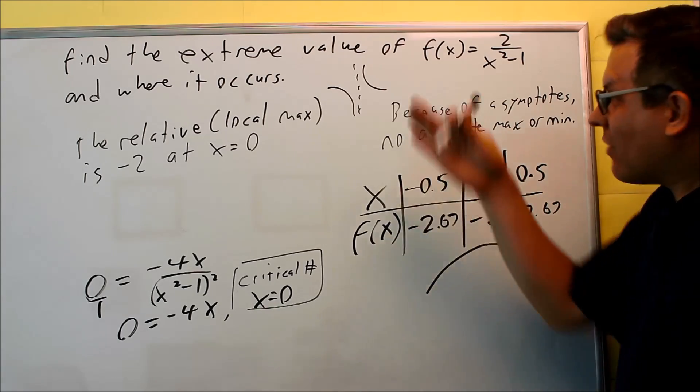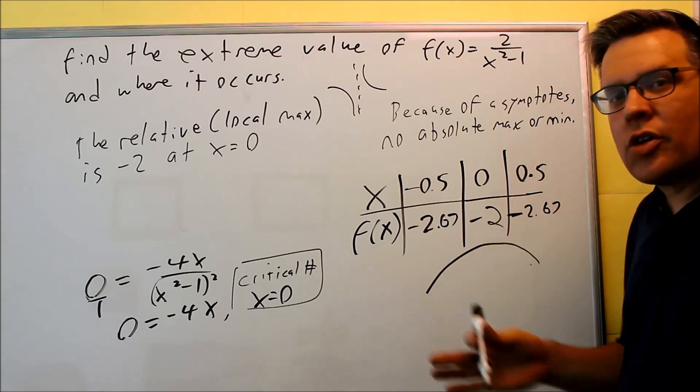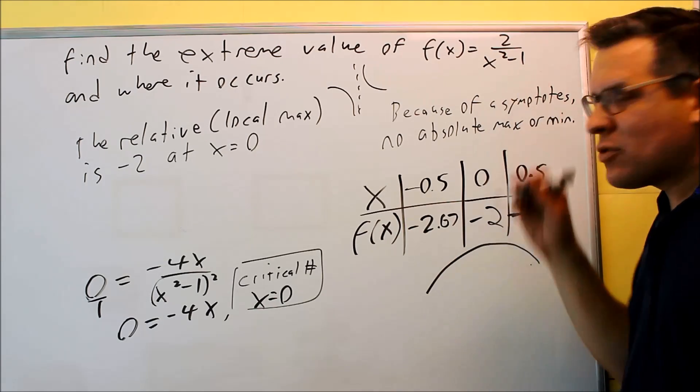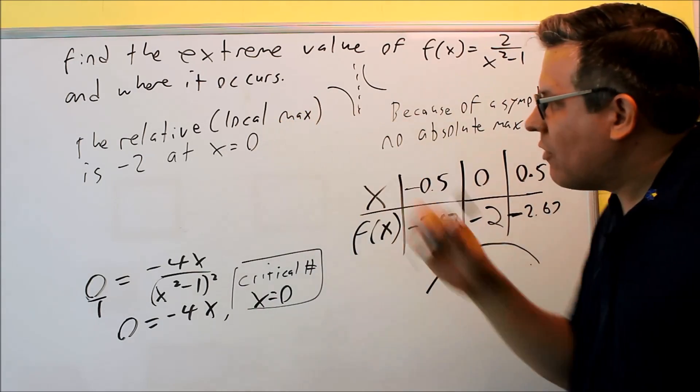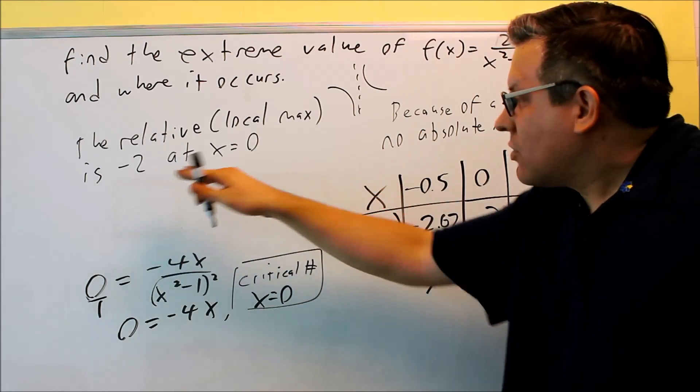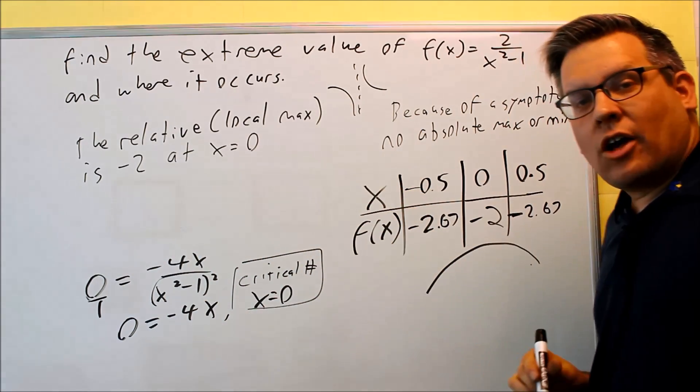So again, this problem, you have to analyze it a little bit more to see whether you have an absolute min or max or relative min or max. In this case, there's no absolute min or max, all we have is a relative or a local max at x equals 0 and the actual value is negative 2.